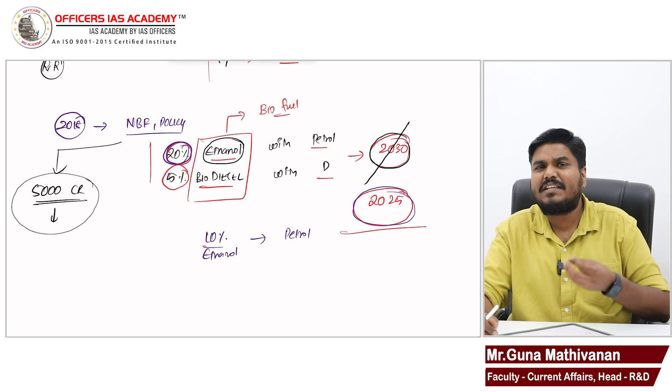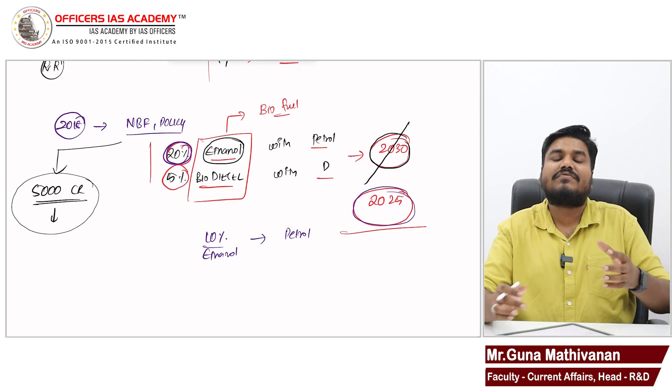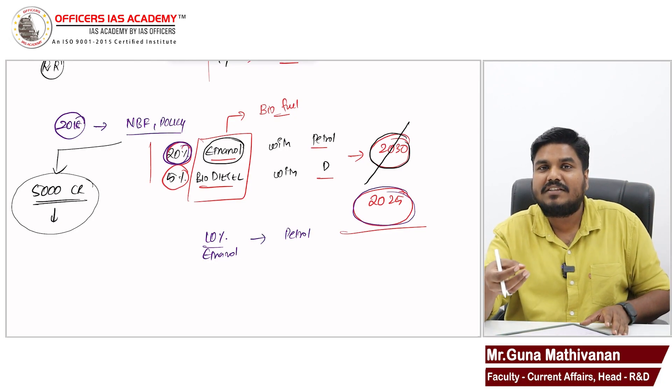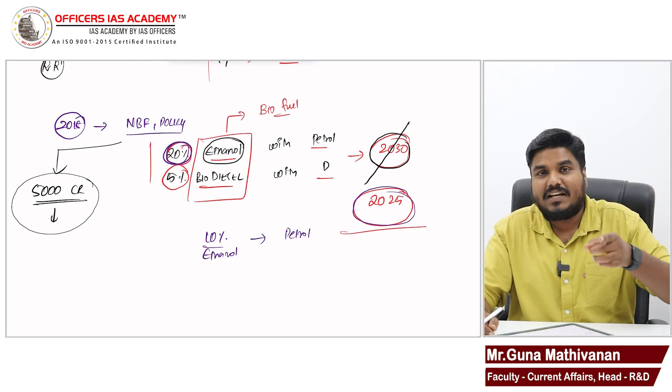This can give additional income for farmers. So, farmers, the plant waste, animal waste, non-edible portion of the plants, instead of burning it, they can sell it to the bio-refineries for producing biofuel. So, farmers can get additional income.